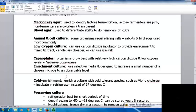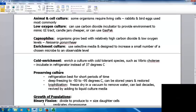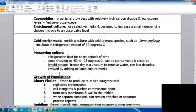Enrichment cultures use selective media designed to increase a small number of chosen microbes to observable level. It provides good growth for the culture you're hoping to get, and usually something to keep other organisms from growing. One type is cold enrichment - enrich culture with cold-tolerant species like Vibrio cholerae, incubated in refrigerator instead of 37 degrees Celsius. When preserving cultures, refrigeration is best for short periods. For longer periods, deep freezing to negative 50 to negative 95 degrees Celsius - they can be stored for years and restored. Lyophilization freeze dries them in a vacuum, removing water. They can last for decades and are revived by adding to liquid culture media. When you commercially purchase organisms, lyophilization is often how they're preserved by the company.